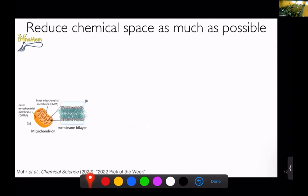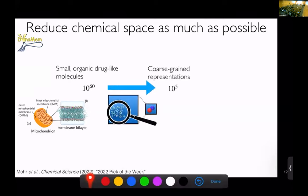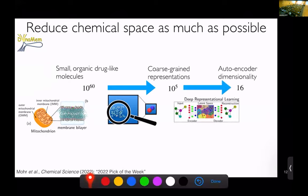The framework is as follows. We're going to try to reduce the chemical space as much as possible before we start sampling it. If you think about the space of small drug-like organic molecules, probably on the order of 10 to the 60 or more. Because we coarse-grain, we end up with only about 10 to the 5 representations. That's because of this use of these bead types in the coarse-grain model. This is a purely physics-based reduction in the size of chemical space here.